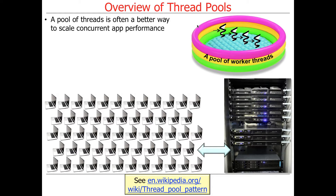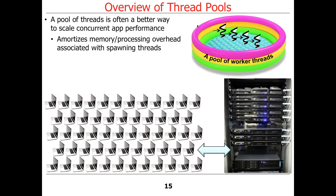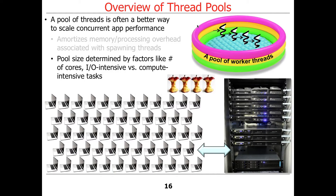Therefore, a more effective way of scaling up the system's performance is by using a thread pool — a pool of worker threads. This is beneficial because it amortizes the memory and processing overhead associated with spawning threads. We don't spawn a thread for every client; we typically spawn a fixed number of threads, or a dynamically sized set of threads that can grow to a certain limit. You can decide how big to make the pool by various factors, like the number of cores you have, how I/O-intensive your tasks are versus compute-intensive, and so on.